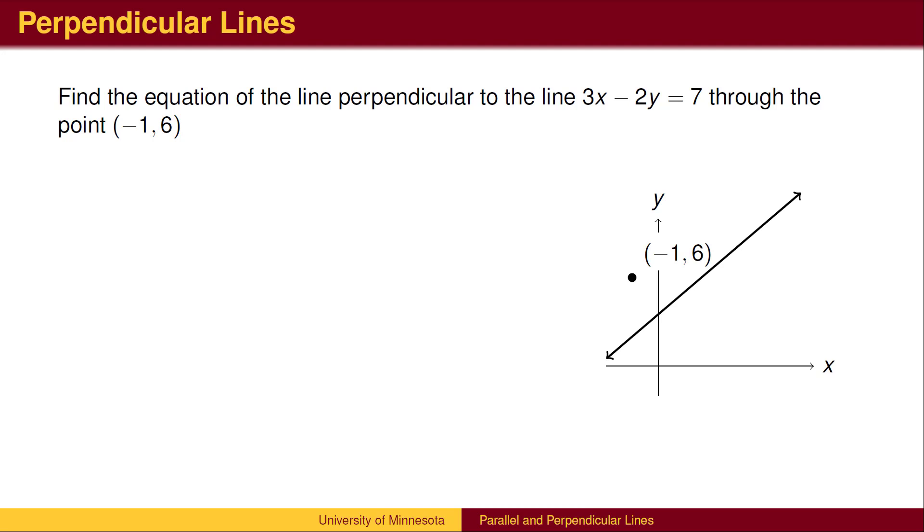First, we need to find the slope of the given line, then find the perpendicular slope by taking a reciprocal and changing sign. Solving the equation of the line for the variable y, we get the slope-intercept form. The slope of the original line is 3 halves.